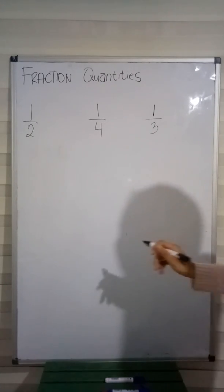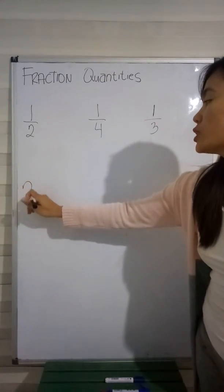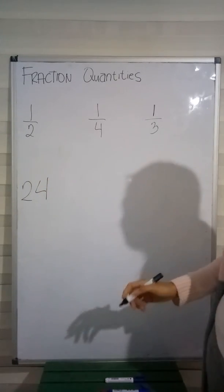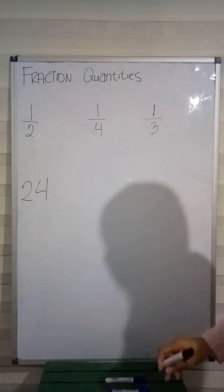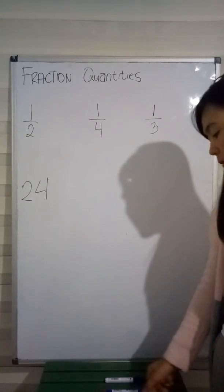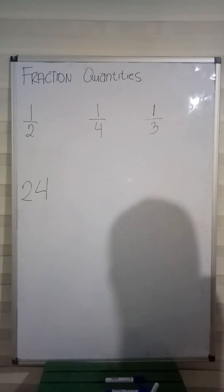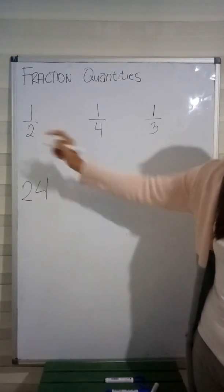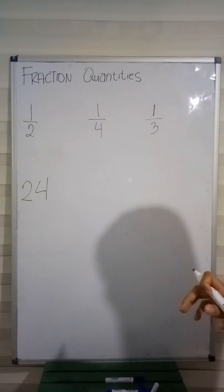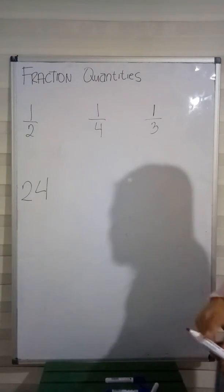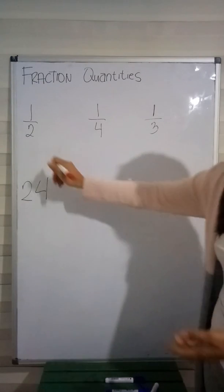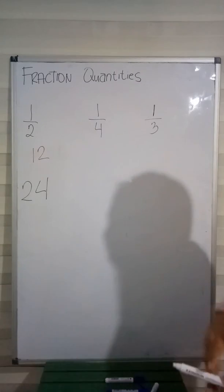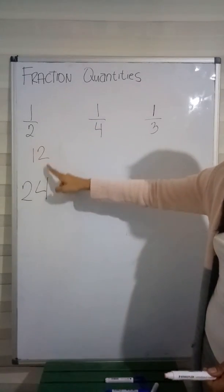For example, we have the number 24. Now we will get the fraction quantities of 24. What is 1 half of 24? To get the 1 half of 24, we just have to divide 24 by our denominator 2. So, 24 divided by 2 is 12. Therefore, 1 half of 24 is 12.